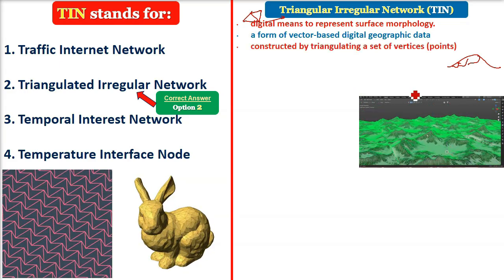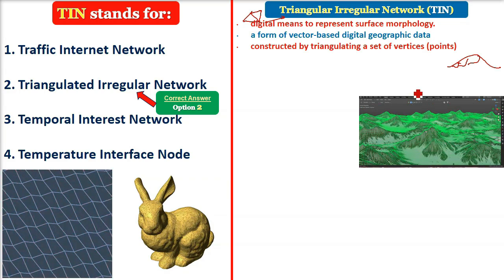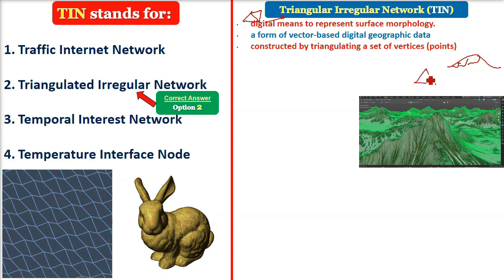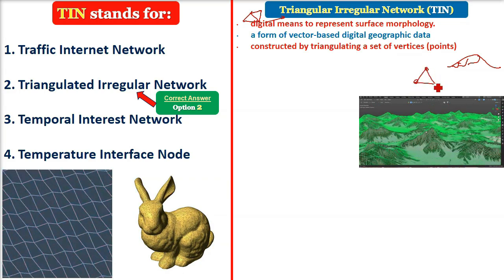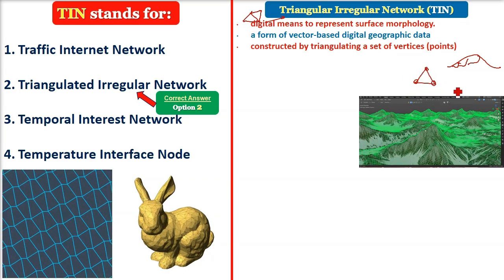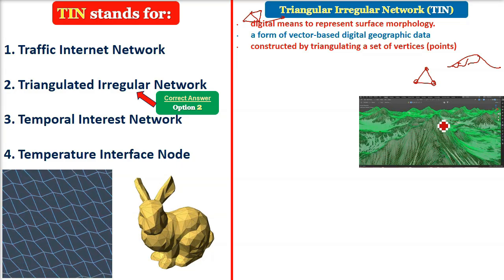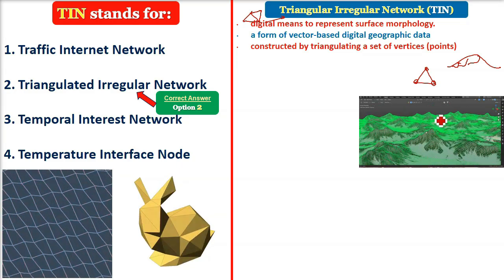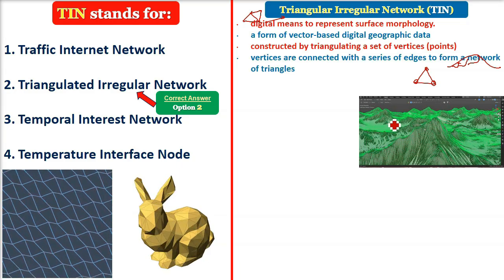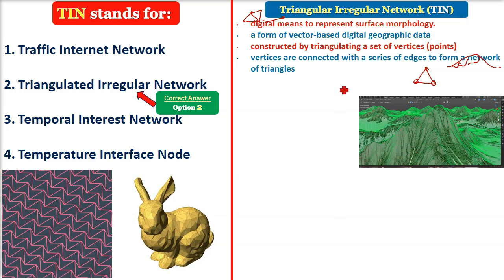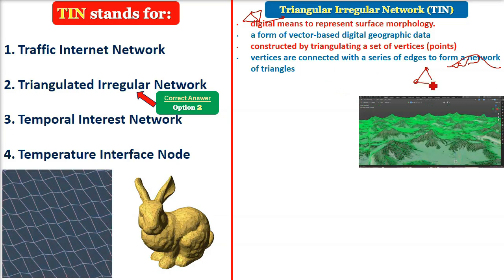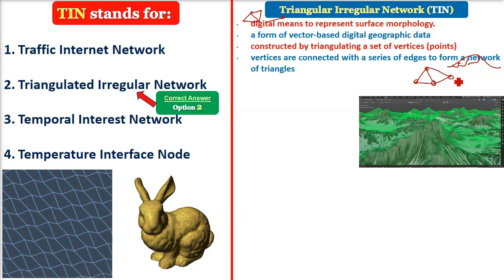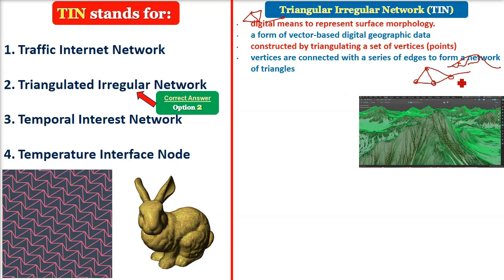TIN is a digital means to represent surface morphology. It is a form of vector-based digital geographic data, constructed by triangulating a set of vertices or points, which are connected with a series of edges to form a network of triangles.